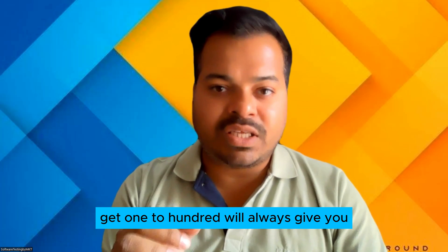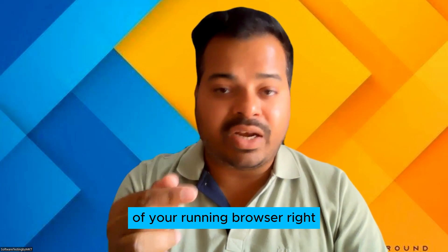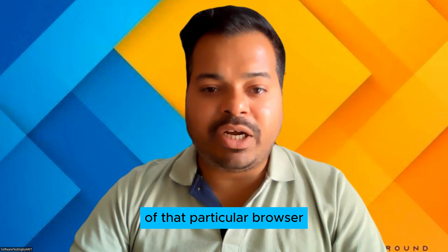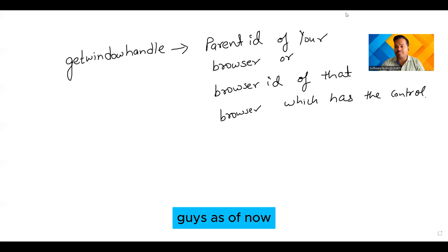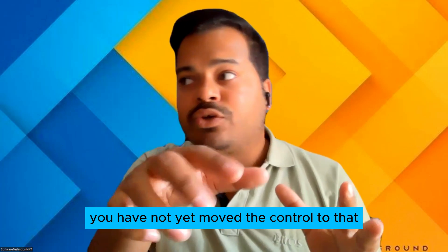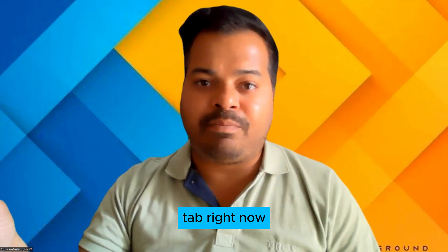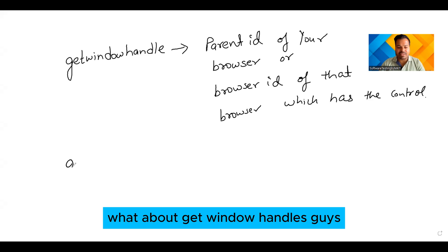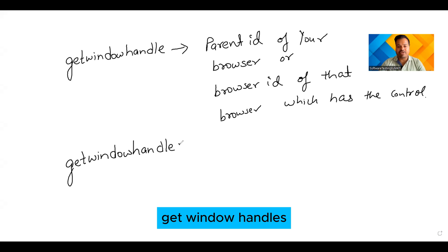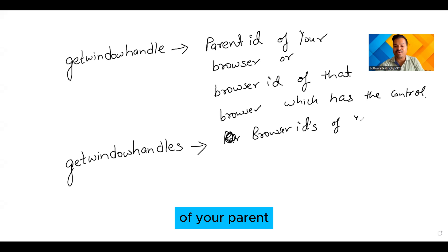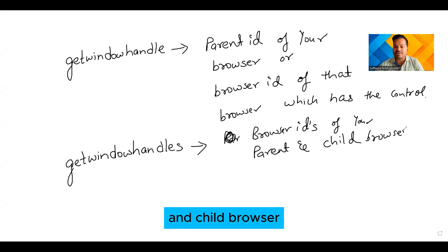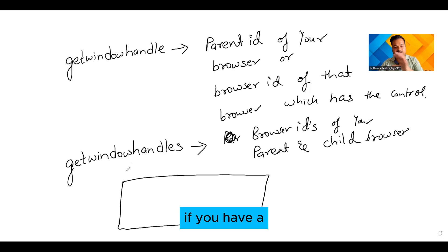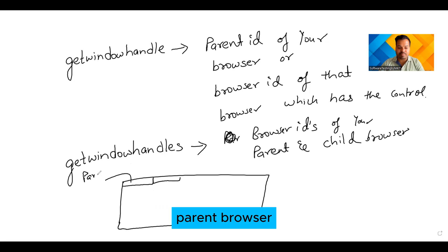So if someone asks you tomorrow what exactly is getWindowHandle — getWindowHandle will always give you the parent ID of your running browser, or the ID of that particular browser that has the control. As of now the browser you are running has control; you have not yet moved control to any other browser. Now let me show you what getWindowHandles does. getWindowHandles gives you the browser IDs of both your parent and child browsers.